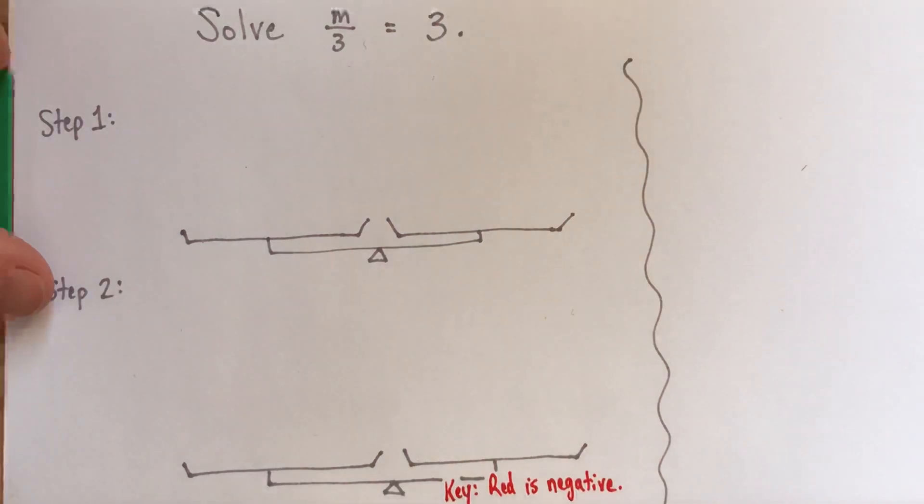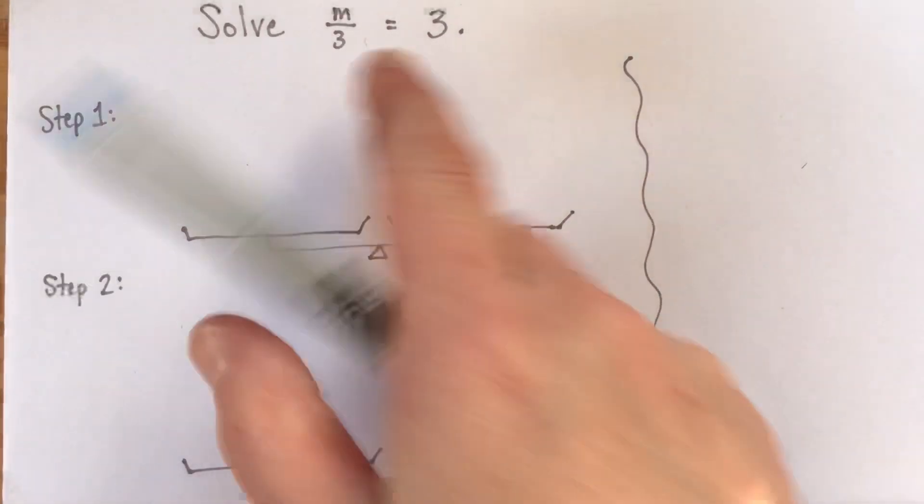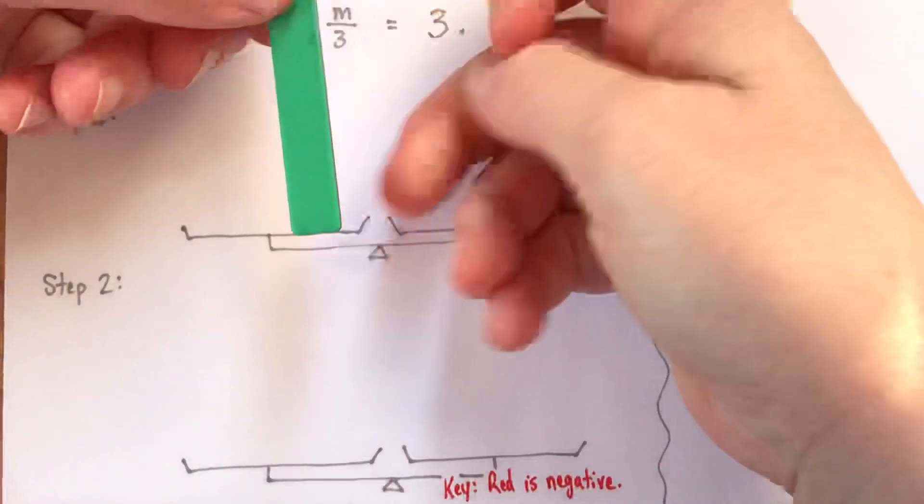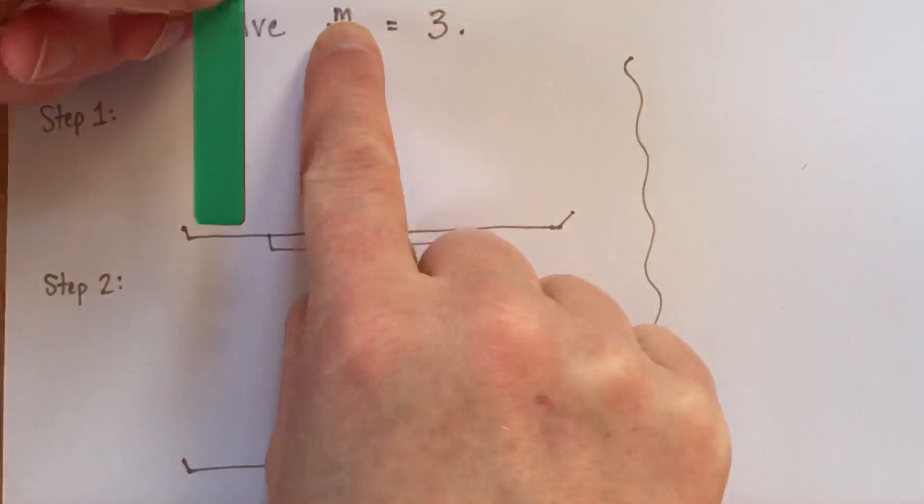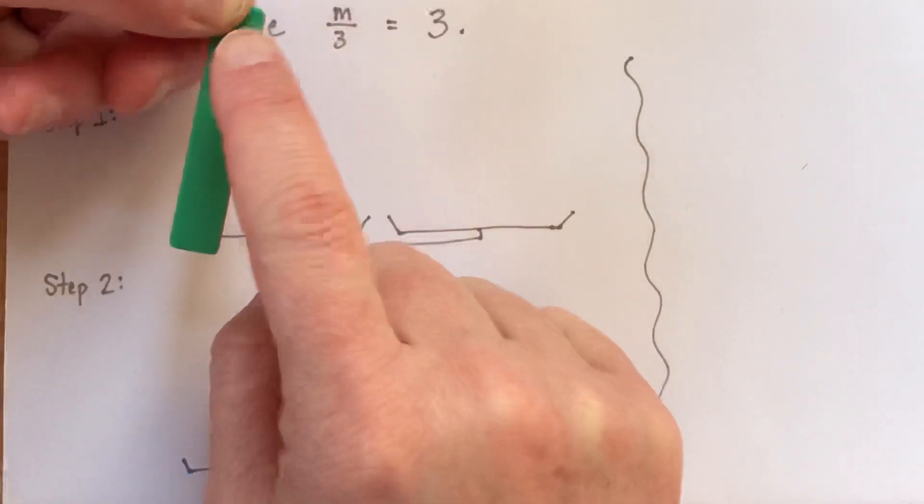With my algebra tiles, I use my red sides to mean negatives. And here, everything is positive, so I won't use any red. This is my x tile. It's my variable tile. Sometimes it could be x. In this case, it would be m.